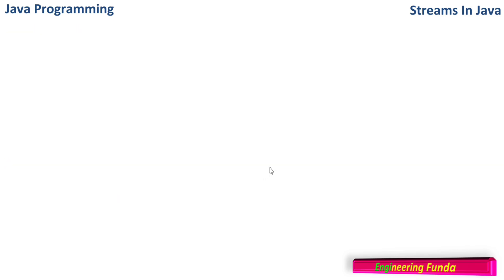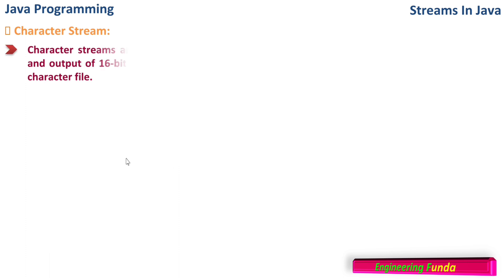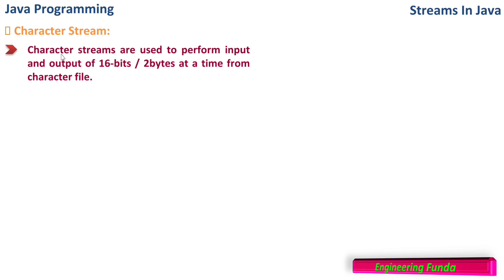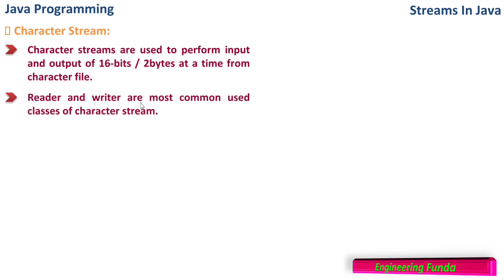Now, what is the character stream? Character streams are used to perform input and output of 16 bits — that is two bytes at a time — from the character file. So it is performing operations on 16 bits or two bytes from the character file. Reader and Writer are the most common classes used in the character stream.